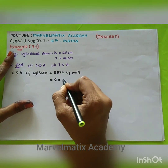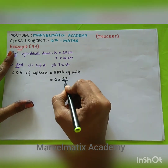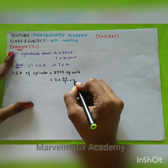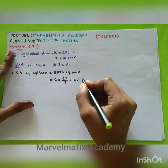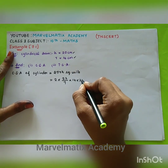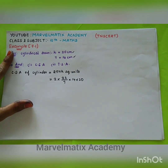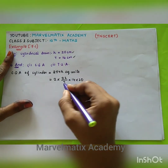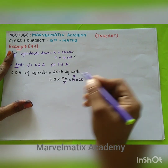Substituting: 2 × (22/7) × 14 × 20. Strike out the 7 and 14. 2 times 22 times 20.